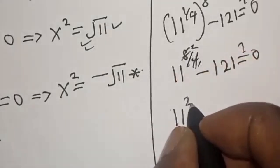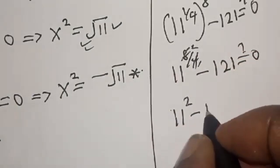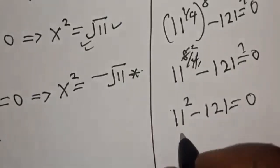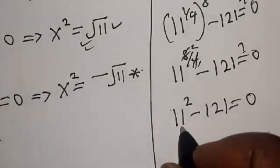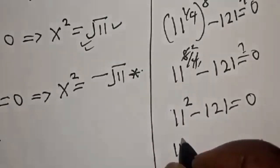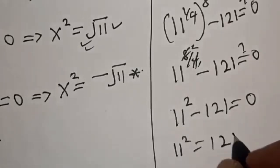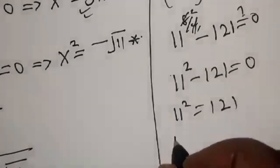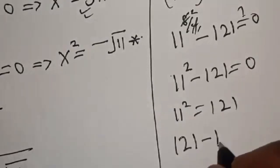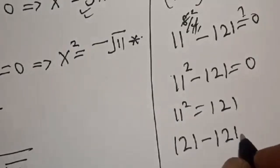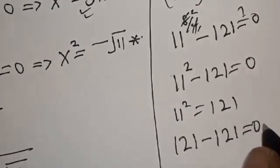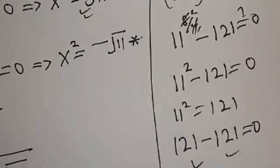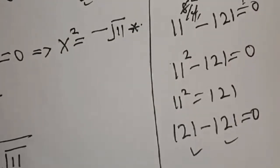11 squared minus 121 is equal to 0. 11 squared equals 121. Therefore, 121 minus 121 equals 0, which satisfies the given equation.